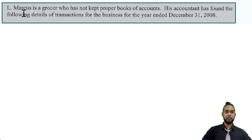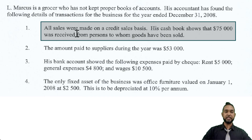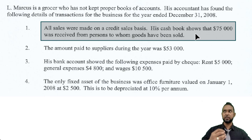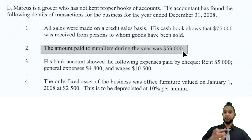So they're telling us that L. Marcus is a grocer who has not kept proper books of accounts. His accountant has found the following details of transactions for the year ended December 31st, 2008. All sales were made on a credit sales basis. His cashbook shows that $75,000 was received from persons to whom goods have been sold — so this $75,000 is receipts from debtors, which we'll use to figure out the sales figure. The amount paid to suppliers during the year was $53,000 — that's payments to creditors, which we'll use to figure out purchases.